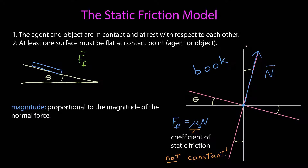We find the normal force, which is perpendicular to that surface, and then our frictional force follows a similar path to that of kinetic friction. The magnitude of our static friction force is proportional to the magnitude of the normal force. The frictional force is equal to a parameter mu sub s — the coefficient of static friction — times the magnitude of the normal force. One important difference is that this coefficient of static friction is not a constant; it can vary.